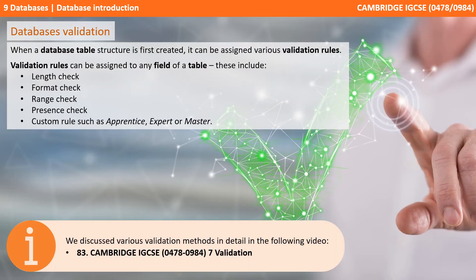When a database table structure is first created, it can also be assigned various validation rules. Validation rules can be assigned to any field of that table, and these include length checks, format checks, range checks, and presence checks. We could also create customisable validation rules. We discussed various validation methods in detail in a previous video.